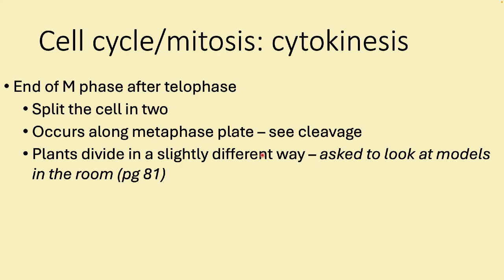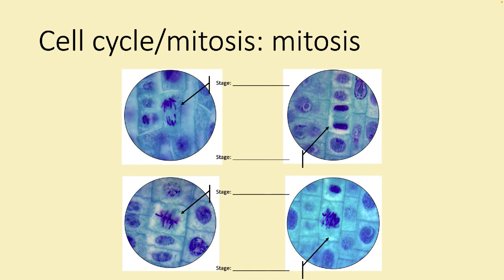Cytokinesis is the end of M phase; it occurs after mitosis and is how you split the cell into two. It occurs along the metaphase plate and creates cleavage — a dent caused by a ring around the cell squeezing down to pinch it into two pieces. In plants, they make a cell wall between the two halves, while animals squeeze and pinch the cells apart.